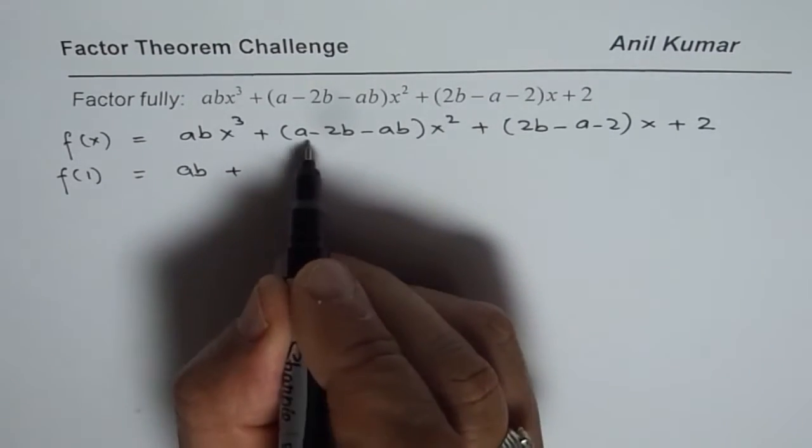Now, abx² + (a − 2b)x − 2 is a quadratic expression. To factor it further, we are looking for two numbers p and q whose product is −2 × ab = −2ab and whose sum is (a − 2b).